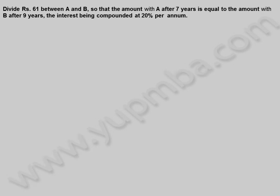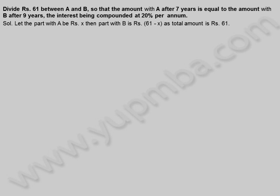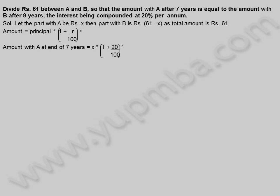Let us see another example. Divide 61 rupees between A and B, so that the amount with A after 7 years is equal to the amount with B after 9 years, the interest being compounded at 20% per annum. Solution: let the part with A be X rupees, then part with B is 61 minus X rupees, as total amount is 61 rupees. Amount is equal to principal into 1 plus R by 100 whole power N.